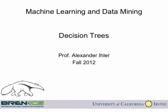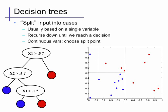Decision trees are another flexible class of functions, or learners, that are commonly used in machine learning. A decision tree represents a function consisting of a series of comparisons, or if-then-else statements. Each branch may lead to another comparison and branch, or to an output value. We can draw this as a tree, where the outputs are the leaf nodes.